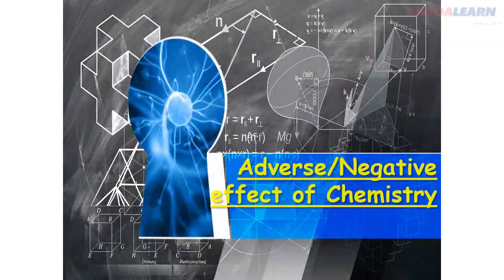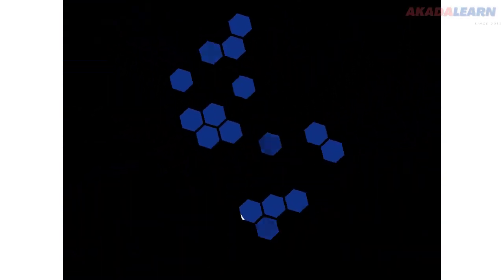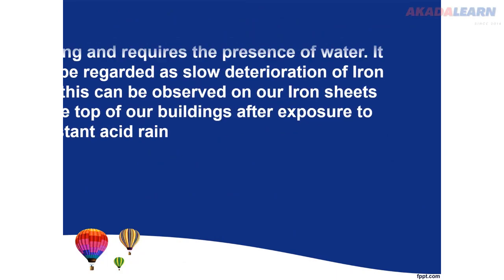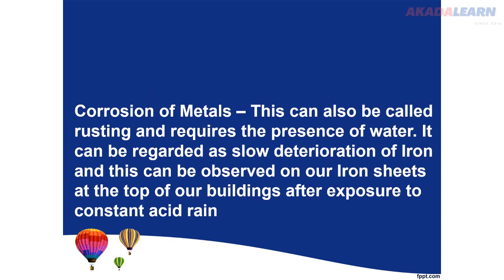Now, let's take a good look at some adverse or negative effects of chemistry to humanity. Have you ever wondered why your zinc rusts or why metals corrode? It is because of acid rain, which is caused by fumes emitted into the environment by factories and industries during production. These fumes end up combining with water in the atmosphere and come back as acid rain, which corrodes metals and zinc.